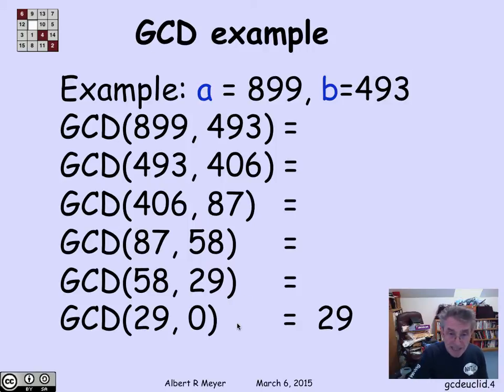This is a quite fast algorithm, because I keep dividing the numbers that I have by each other, and it gets small fast. We'll be more precise about that.